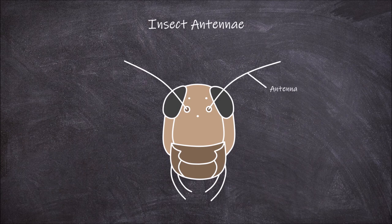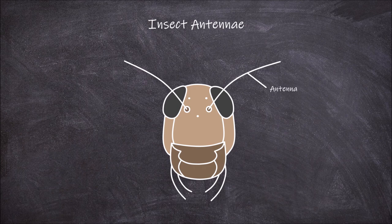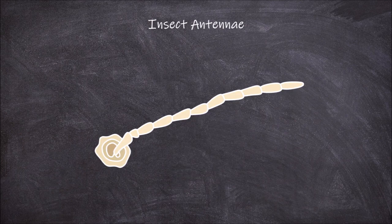Antennae are paired sensory structures located on the head of insects. They generally consist of three parts.